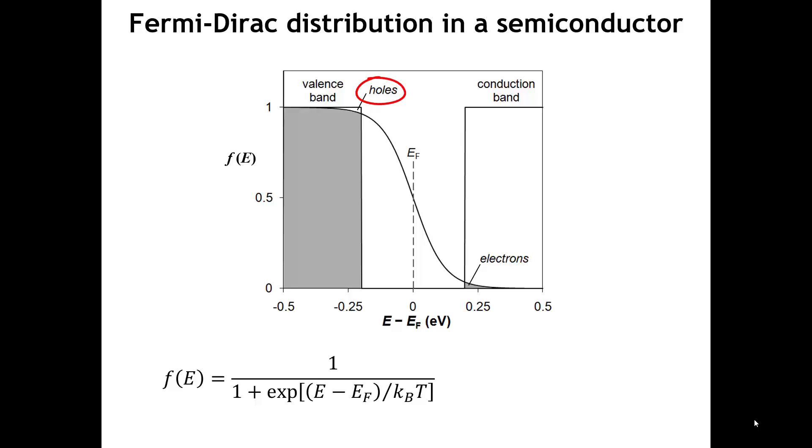So the basic thing we see is that we have just a few missing electrons in the valence band, those are called holes, and just a few electrons in the conduction band. And so we have a relatively low number of charged carriers compared to a metal.